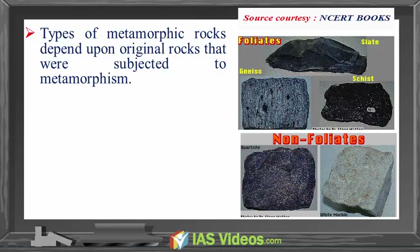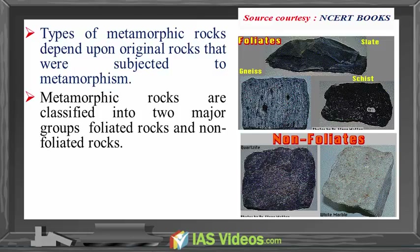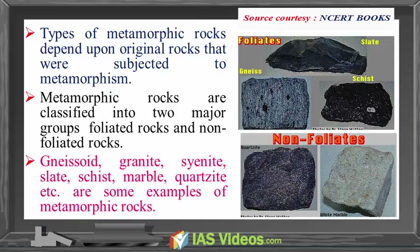Types of metamorphic rocks depend upon the original rocks that were subjected to metamorphism. Metamorphic rocks are classified into two major groups: foliated rocks and non-foliated rocks. Gneissoid, granite, kyanite, slate, schist, marble, quartzite, etc. are some examples of metamorphic rocks.